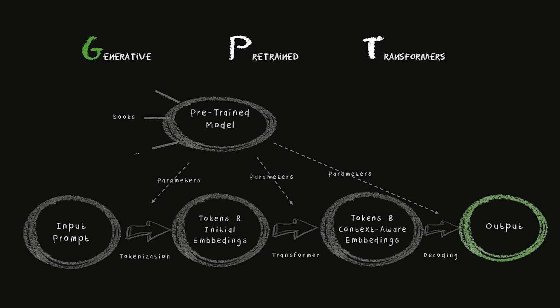So I hope this explanation helped to understand the high-level workings of an LLM. I hope this also clarifies what an acronym like GPT stands for: the G stands for generative as it generates output, the P stands for pre-trained as it uses the parameters of a pre-trained model to tokenize, transform, and decode the input into an output, and the T stands for transformers as a revolutionary architecture in the LLM.